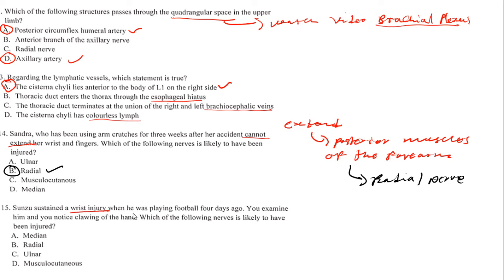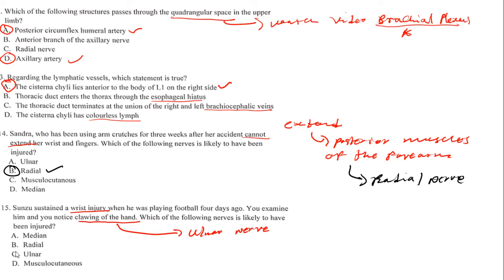Sun Tzu sustains a wrist injury playing football four days ago. On examination, a clawing hand deformity is noticed. As discussed in the brachial plexus video, the clawing hand is associated with the ulnar nerve. The answer is C — the ulnar nerve.